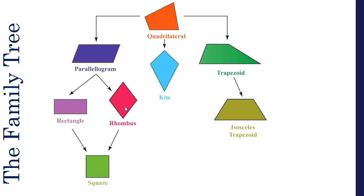As we go down, a rectangle and rhombus are also types of parallelograms, and further down we have squares. So a square is a type of rectangle, rhombus, and parallelogram — all different types of quadrilaterals. In the middle we have kites, and to the right we have trapezoids and more specifically isosceles trapezoids. This video will explain all the different properties that differentiate these shapes.